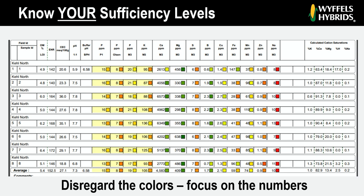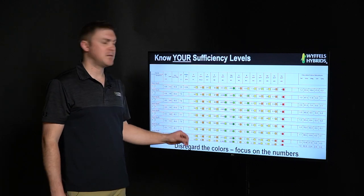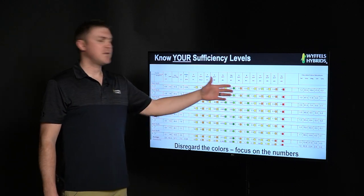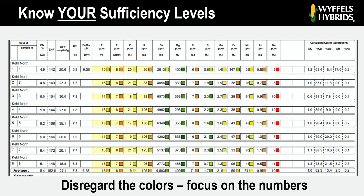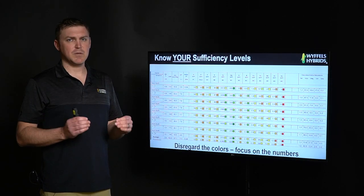The last thing I want to leave you with: disregard the colors that you see on your soil test. Depending on what lab you're using, they might use a different color indicator to identify what they're saying is sufficient, optimum, or deficient. Pay attention to the numbers. Relate them back to the recommendations for your particular region and state — that's what you want to pay attention to. As an example, in the state of Iowa, Iowa State recommends that a zinc level of 0.9 or greater indicates optimum or sufficient zinc. But based on this particular soil test, it's showing that to be orange, or in the low range. Always know what the optimum levels are for your particular region.